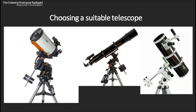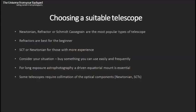Choosing a suitable telescope is obviously a big decision that requires some consideration, as it can involve spending a fair sum of money. The most popular types of telescope available are Newtonians, refractors, and Schmidt-Cassegrains. For beginners, a refractor is by far and away the best choice because it works really well straight out of the box with minimum calibration. For those with a little bit more experience, Schmidt-Cassegrains and Newtonians are a better choice as you can buy much larger apertures at affordable prices.